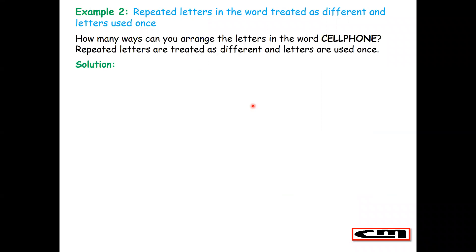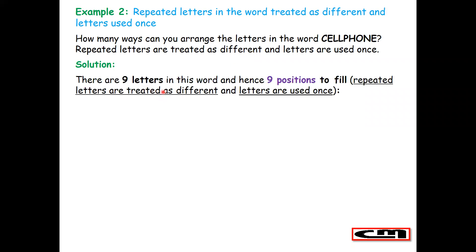Example two — repeated letters in the word treated as different, and letters used once. How many ways can you arrange the letters in the word 'cell phone', where repeated letters are treated as different and letters are used once? Because of the condition 'treated as different,' this word is treated as if it has no repeating letters — they are all different in your eyes. There are nine letters in this word and hence nine positions to fill.